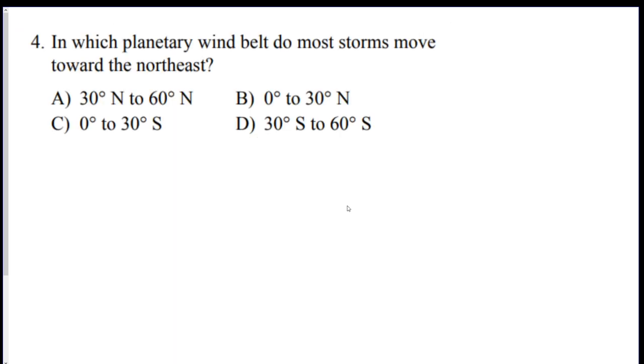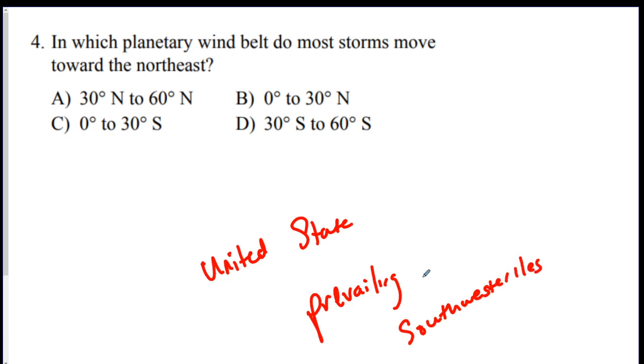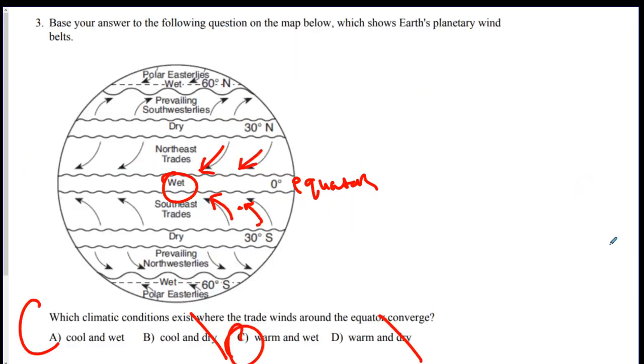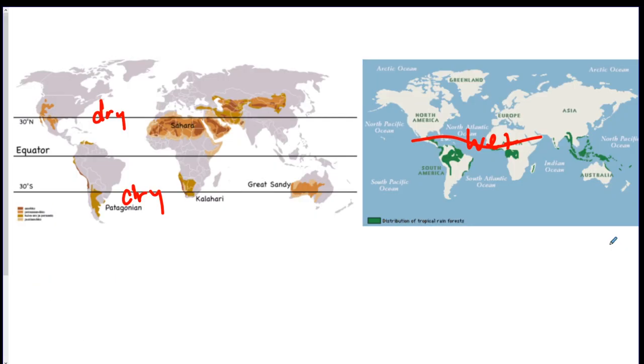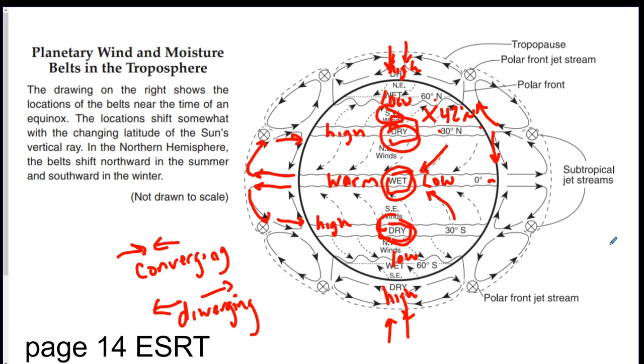Number four, which wind belt do most storms move towards the northeast? Well, in the United States. Remember the prevailing southwesterlies? That's our wind belt. And the southwesterlies move everything to the northeast because they come from the southwest. Now, you can also just use this chart here. And you can look at the arrows between the latitudes, and that is the only one where they're coming from the southwest blowing towards the northeast. So you would just use your reference table on that question.